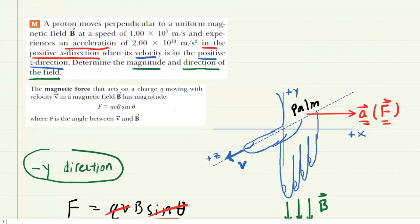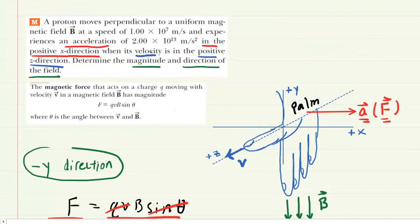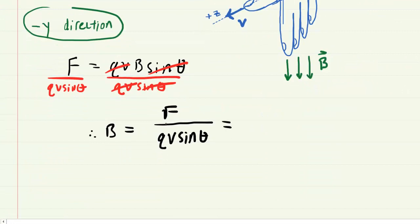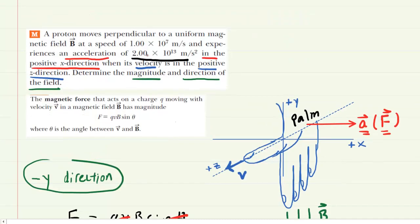Now the question did not give us the force directly, did it? It gave us the acceleration value. But of course, we know from Newton's second law that force is equal to mass times acceleration. So we can actually replace the force with mass times acceleration, and then q v sine theta below. So this particle was a proton. We have the mass of the proton. It's a known value. We have the charge. The acceleration was given. The speed of the proton was given. It was this value right here. All we need is the angle.